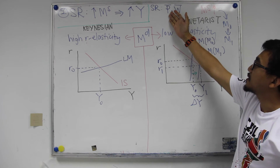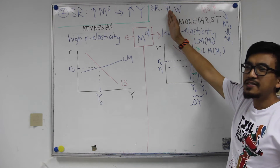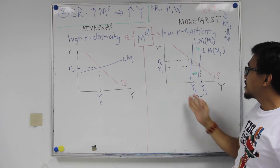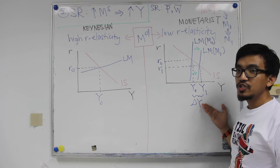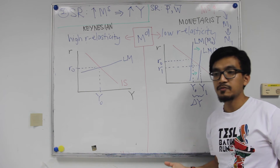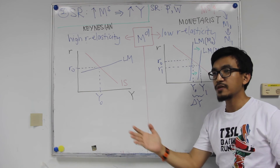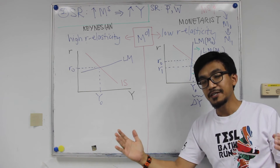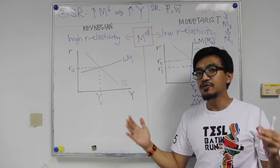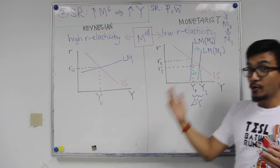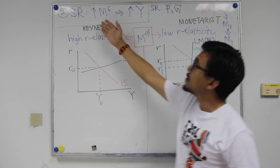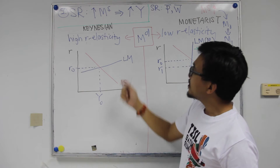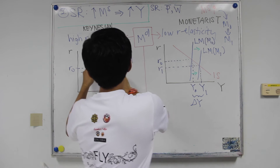In the short run, price won't cause much disturbance in the aggregate demand–aggregate supply framework or in the labor market. With a change in real income, firms will demand more labor. Since wage is fixed, there will be a full extent of the shift in the labor demand curve, causing a large increase in employment — another real variable. So a change in money supply can also affect employment.